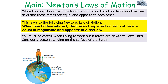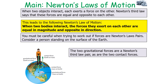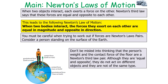You must be careful when trying to work out if forces are Newton's third law pairs. Consider a person standing on the surface of the earth. The two gravitational forces are a Newton's third law pair — they are opposite, act on two different objects, and have the same size. Do not be misled into thinking that the person's weight and the contact force of the floor are a Newton's third law pair. Although they are equal and opposite, they do not act on different objects and they are not of the same type, so they cannot be a Newton's third law pair.